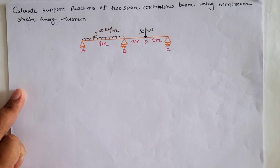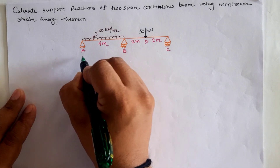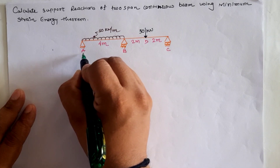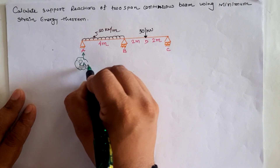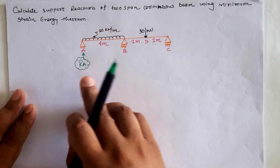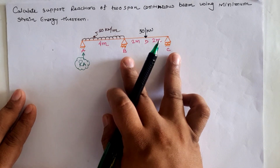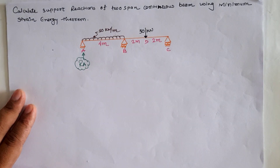For using Castigliano's second theorem, first of all we have to select one redundant reaction from the given beam. Assuming the vertical reaction at location A as the redundant, we then use this redundant reaction to find Rb and Rc in terms of Ra using three equilibrium conditions: sigma H = 0, sigma V = 0, and moment at any location = 0.